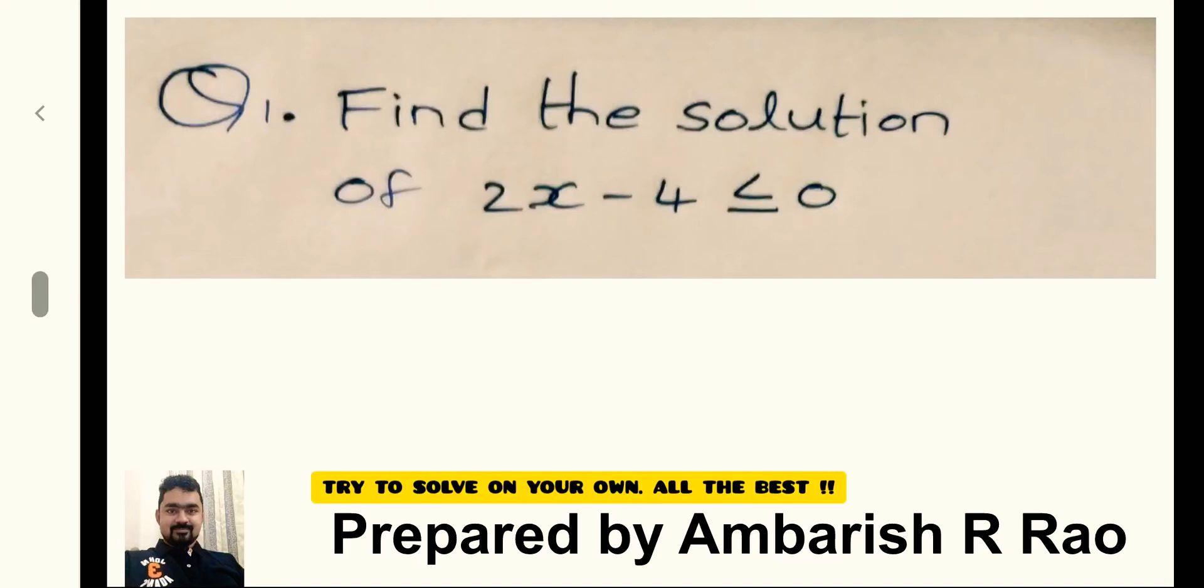Find the solution of 2x-4 is less than or equal to 0. It is a linear inequation.